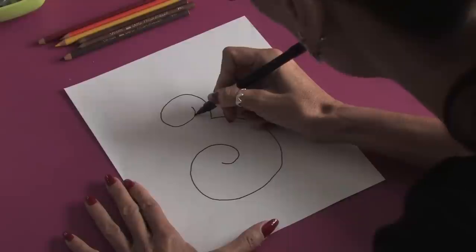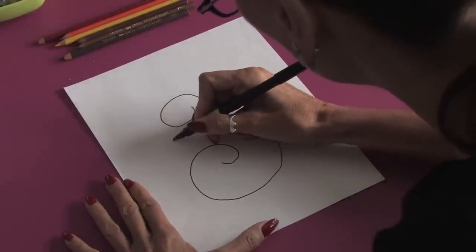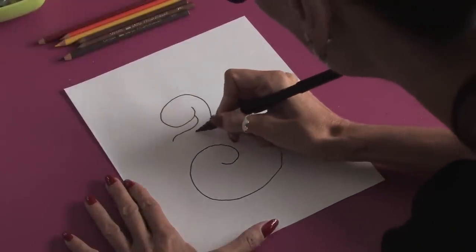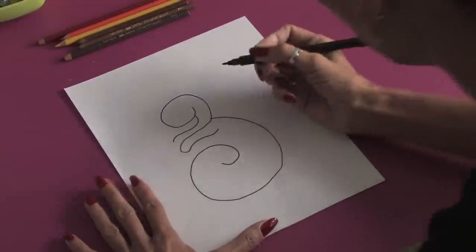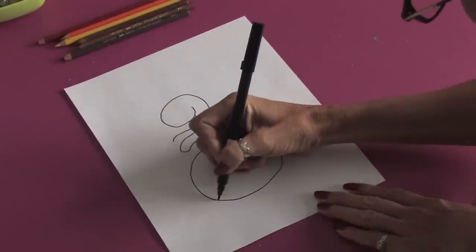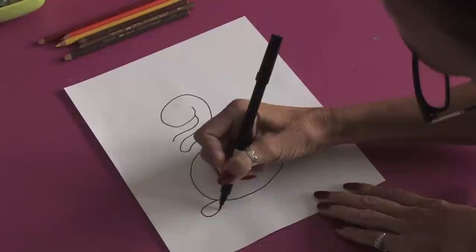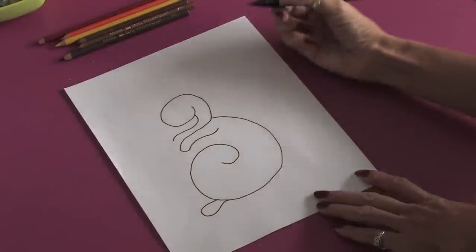Then we're going to come back and do a little line here for the paw and another little line here for the front paw. We're going to come to the bottom and do a little semi-circle to get the bottom foot in.